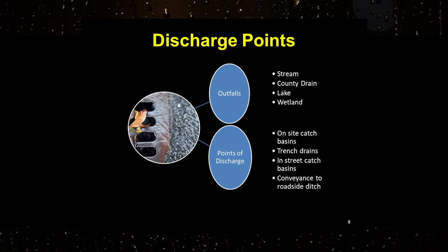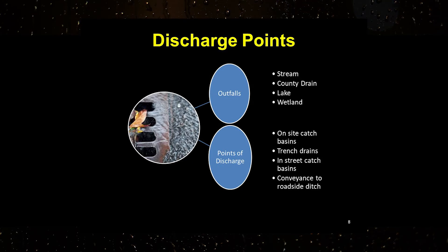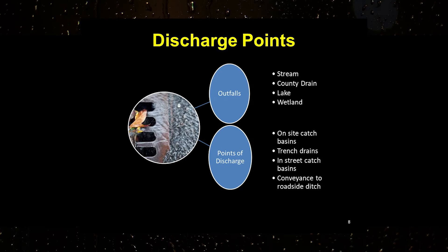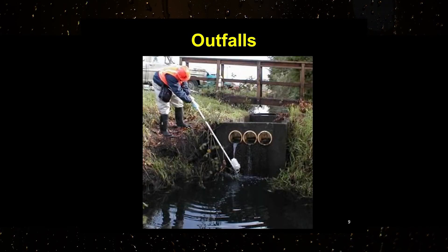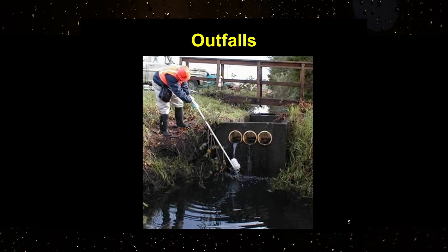Samples are collected at discharge points, which are the locations where stormwater is released and must be included in the Stormwater Pollution Prevention Plan site map and visual assessment written procedures. There are two types of discharge points: outfalls and points of discharge. Outfalls are the point where stormwater discharges directly to the surface waters of the state, including streams, lakes, ponds, county drains, and wetlands. Point source discharges are defined as any discernible conveyance, such as pipes, channels, conduits, or ditches from the facility.